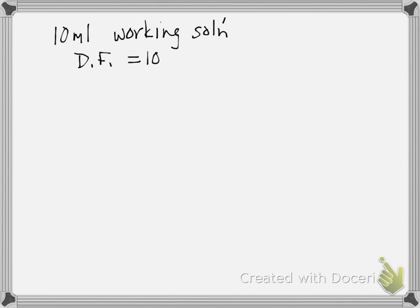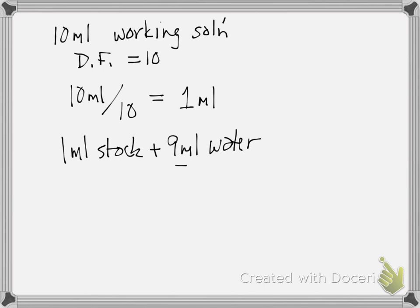So if we take our working solution volume, 10 mills, and divide by our dilution factor, we get 1 mill. That means we need to add 1 mill of stock solution plus 9 mills of water or solvent to equal 10 mills of working solution. In this case, it will be 10 millimolar.